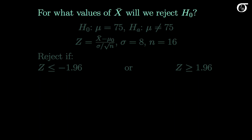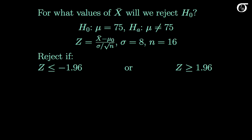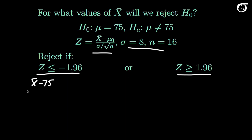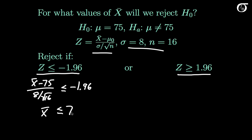For what values of the sample mean x-bar will we reject the null hypothesis? This will help with our power calculations. We are rejecting the null hypothesis if z is less than or equal to minus 1.96 or greater than or equal to 1.96. Using our z test statistic with mu naught equal to 75, sigma equal to 8, and n equal to 16, we would reject the null hypothesis if x-bar is less than or equal to 71.08.